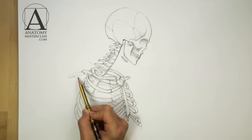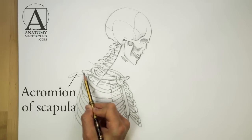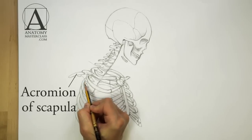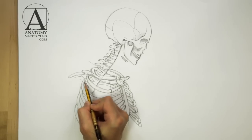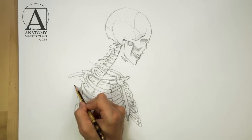The outer edge of the collar bone is connected to the shoulder blade in the part that is called the acromion of the shoulder blade. This acromion hangs above the shoulder joint, protecting the head of the upper arm bone.